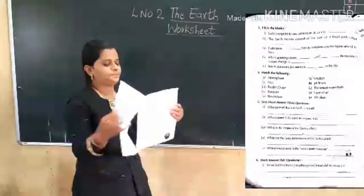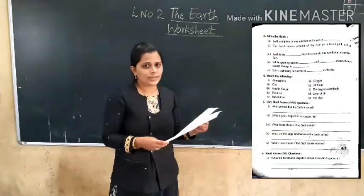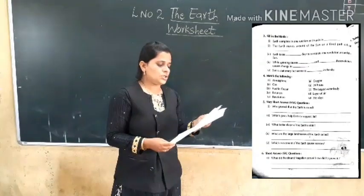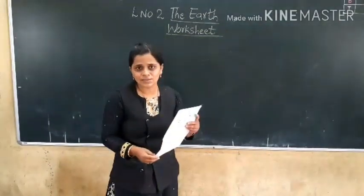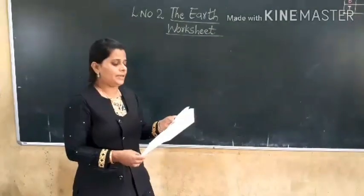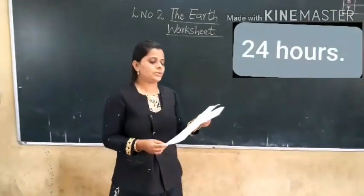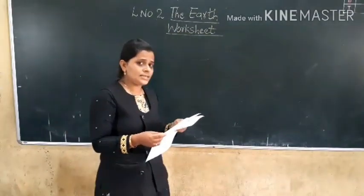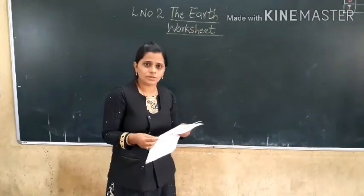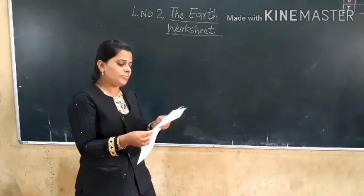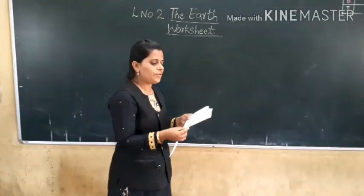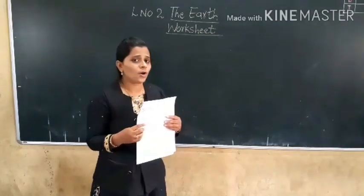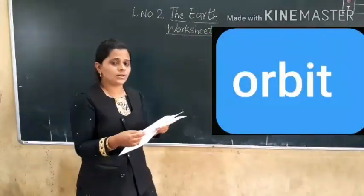Turn your page. The third question is fill in the blanks. The first question: Earth completes its one rotation on its axis in blank. The answer is 24 hours. The second one: The Earth moves around the Sun on a fixed path called blank. The correct answer is orbit.